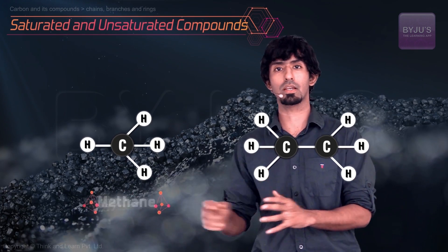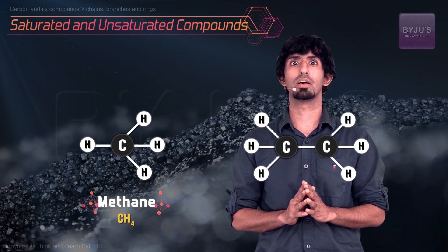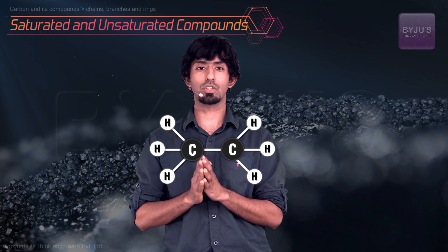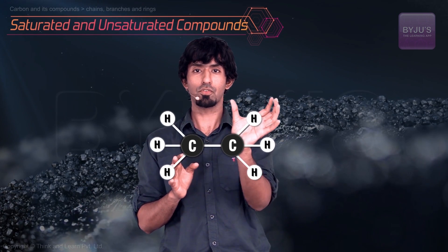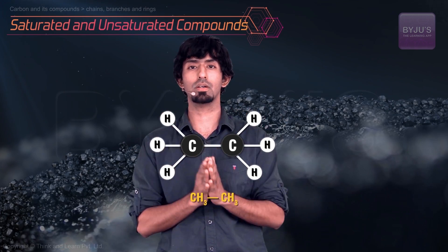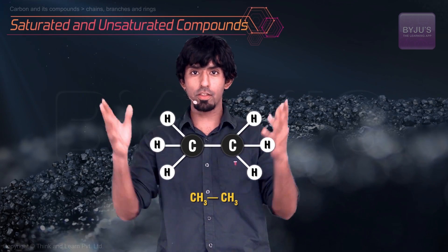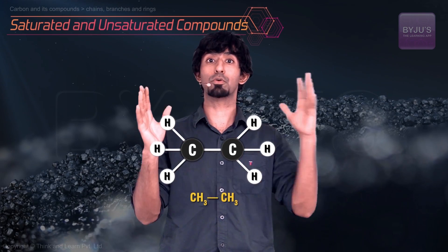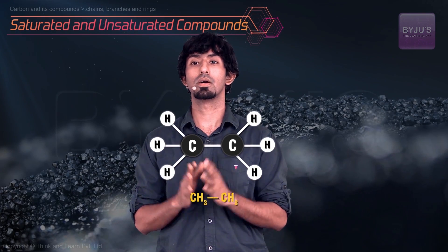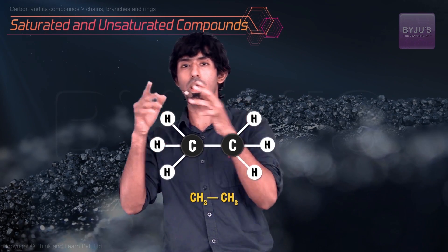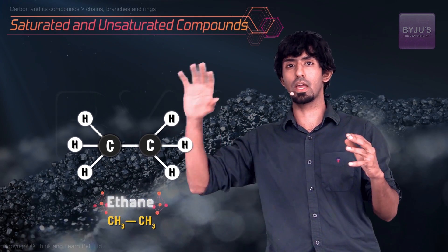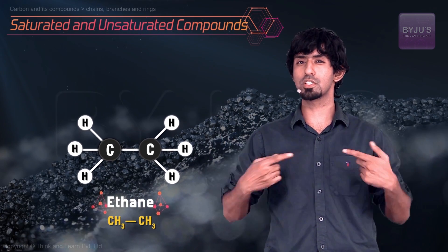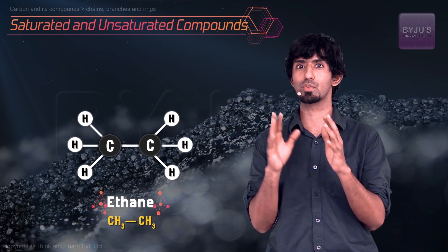We already saw a variation of this where all valencies are satisfied by hydrogens alone — that's called methane, carbon with four hydrogens (CH4). Now here you have two carbons, so instead of CH4 you have CH3 and CH3 coming together. Are all of them getting their octets? Yes they are, and we know that maps to stability. So this compound is called ethane.